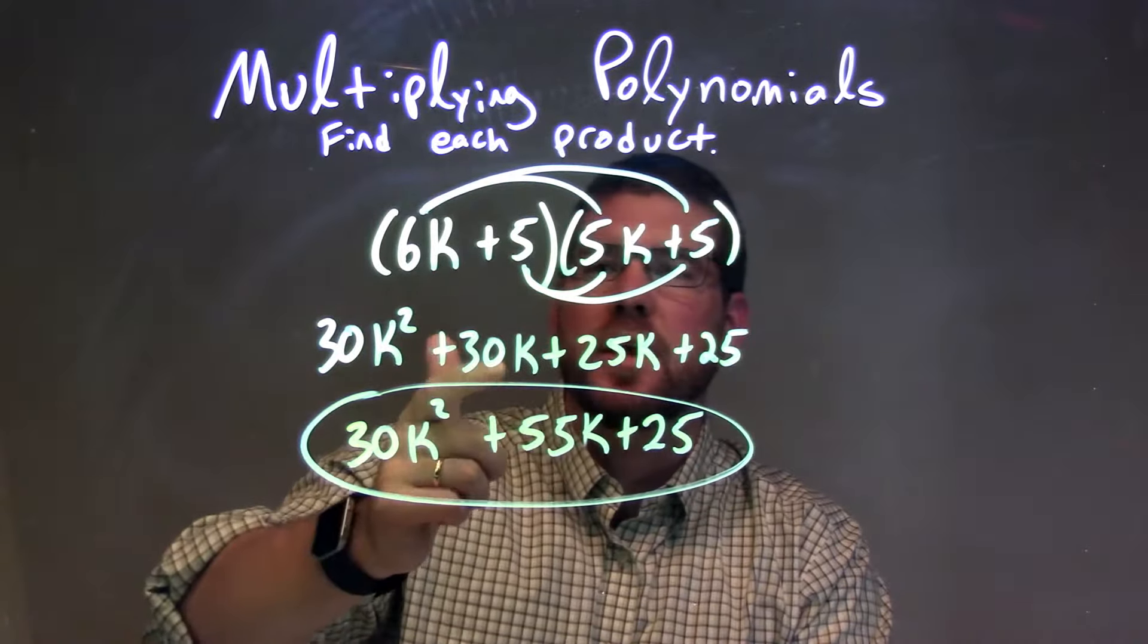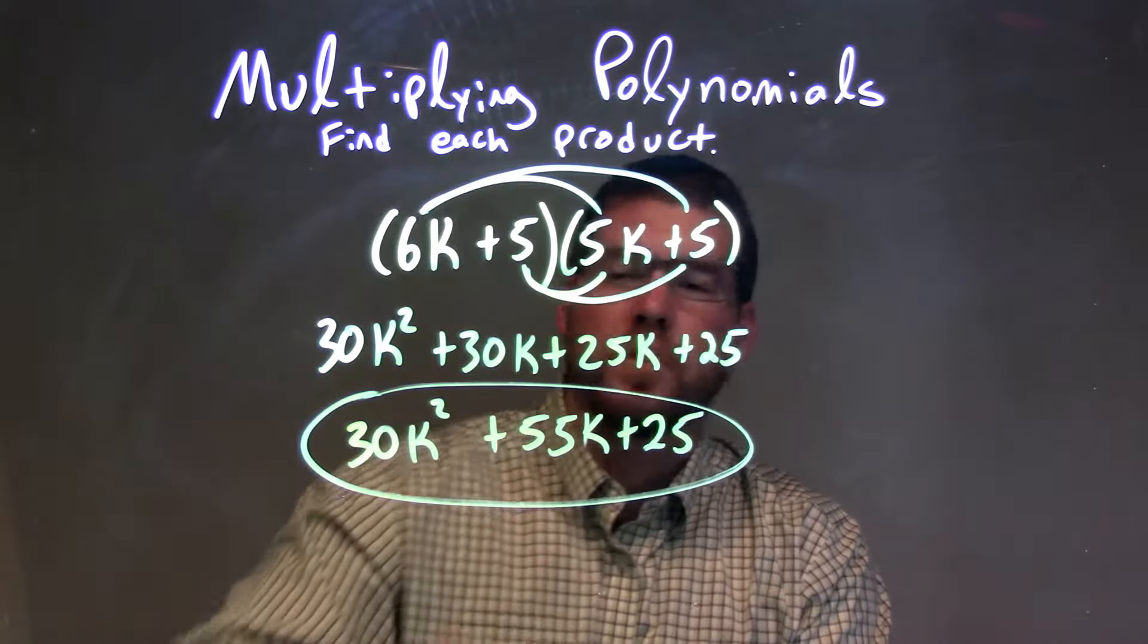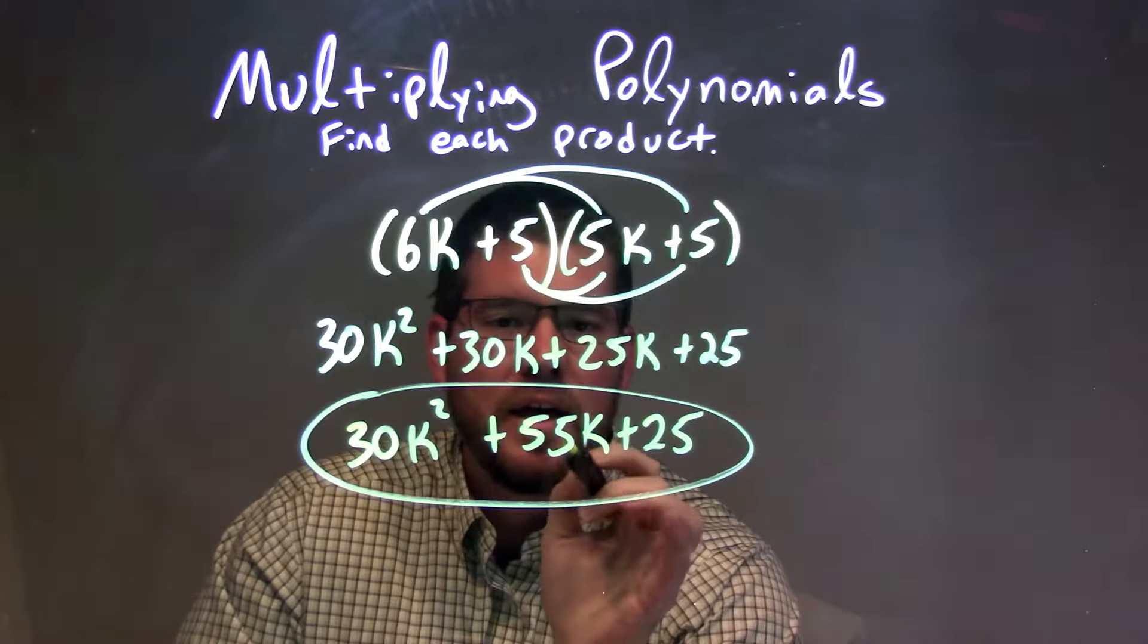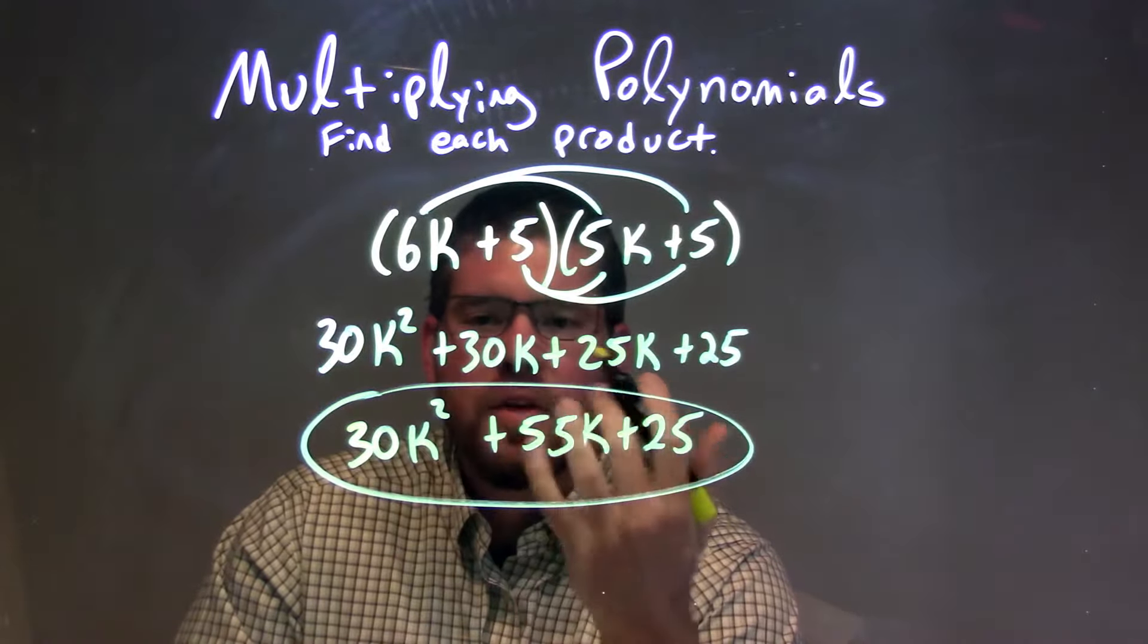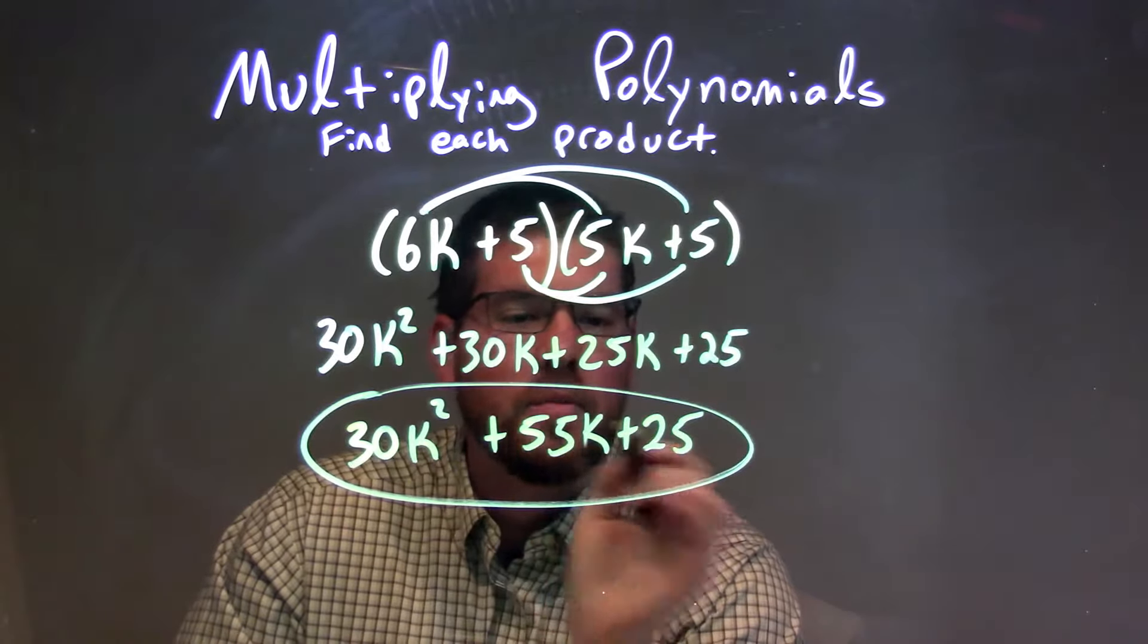6k times 5 was 30k. 5 times 5k was 25k, and 5 times 5 was 25. We combined our like terms, which was 30k and 25k, giving 55k. And so we have our final answer here, 30k squared plus 55k plus 25.